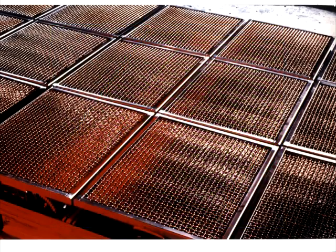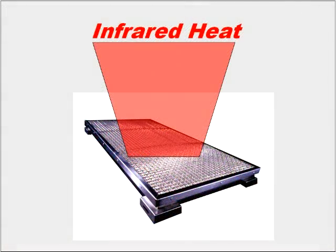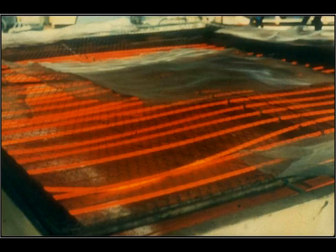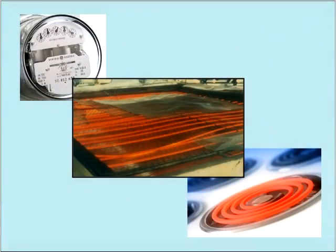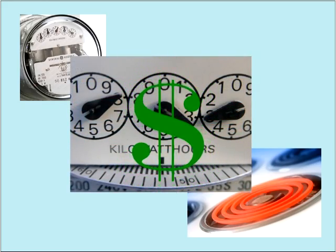Radiant heaters send out infrared energy from a heated surface or emitter. The method in which the heat is generated defines the type or class of heater. Electric heaters create heat from the resistance in heating elements; the energy required is measured in kilowatts.